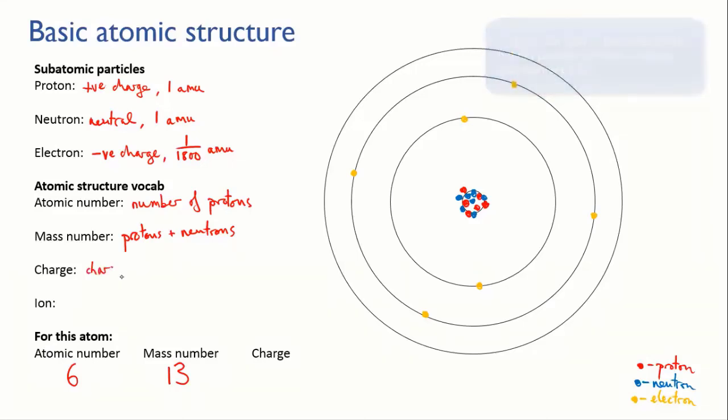To calculate the charge on an atom, look at the total positive charge from the protons and the total negative charge on the electrons and add them together. If there are more protons, the overall charge will be positive, and if there are more electrons, the overall charge will be negative.